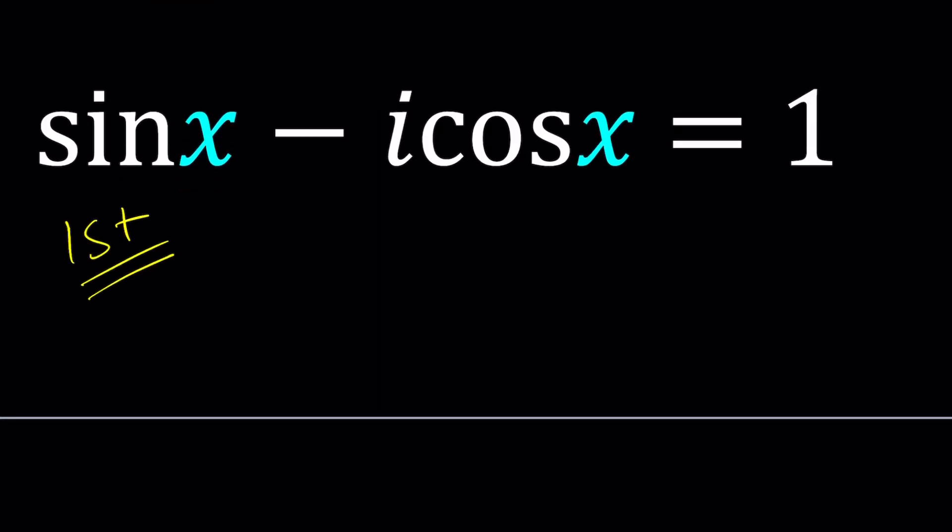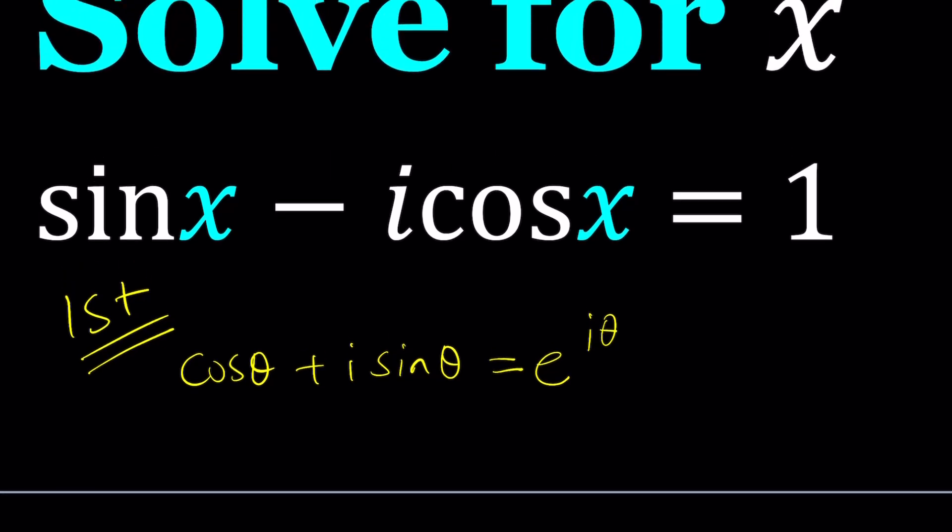So let's remember Euler's formula. It says cosine theta plus i sine theta equals e to the power i theta, right? Now, the question, the million dollar question is, what is my theta? When you look at an equation like this, you don't have a cosine, you don't have a sine, or they're switched around. So here's what we need to do.